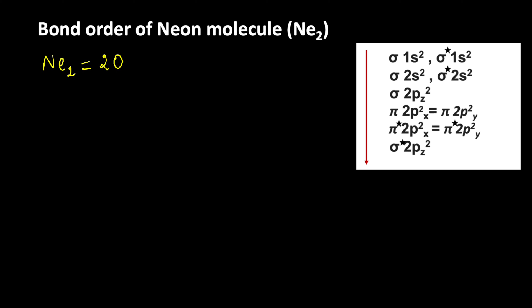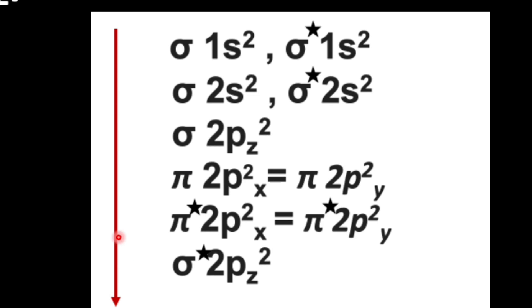Here you can see a table which tells about filling of molecular orbitals based on their increasing energy level. It means after filling sigma 1s bonding molecular orbital, then only electron can enter into sigma star or antibonding molecular orbitals, then sigma 2s, sigma star 2s, then sigma 2pz.